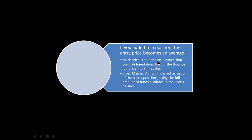The mark price is the price on Binance that controls liquidation. There is usually a difference between the price in the futures account and the price in the normal spot market. For instance, if Bitcoin is trading at nine thousand four hundred and fifty dollars in the spot market, it's not the same in the futures market — the futures price is the mark price.